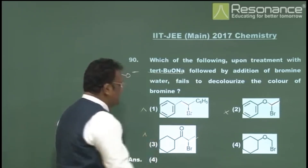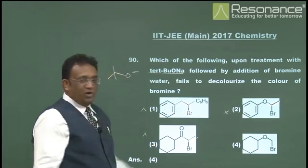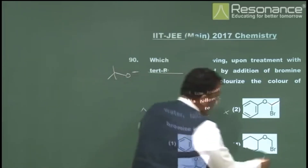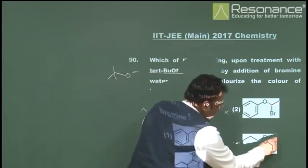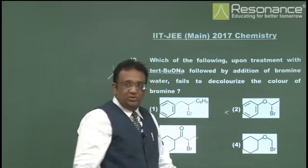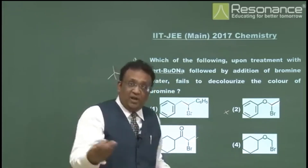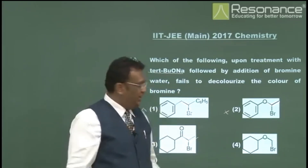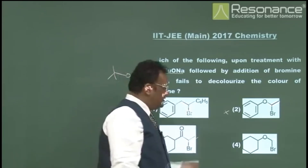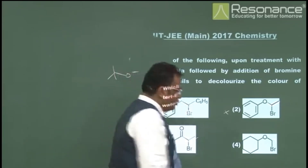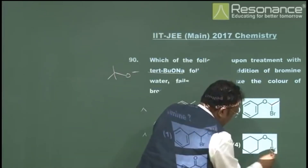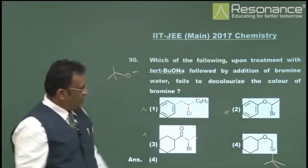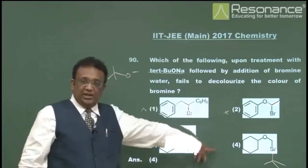What remains is clearly the answer. In that substrate, there is no beta hydrogen — in fact, no beta carbon at all — so elimination is simply not possible. The only possible reaction is substitution. The substitution product is not an alkene, so it fails to decolorize bromine water. This is the correct answer.